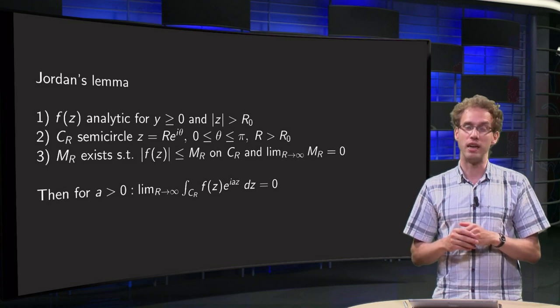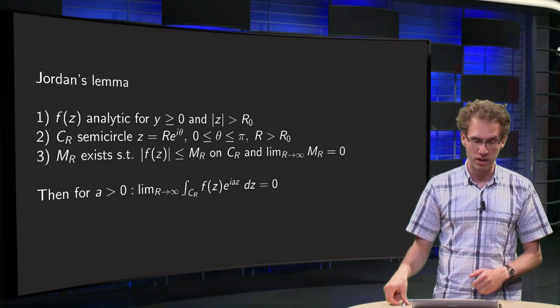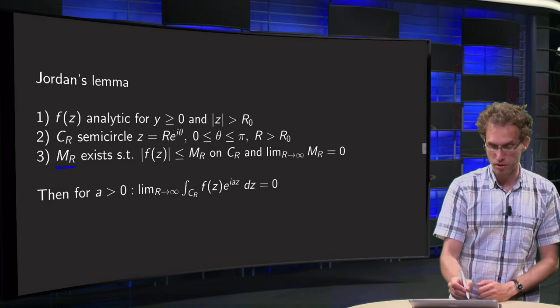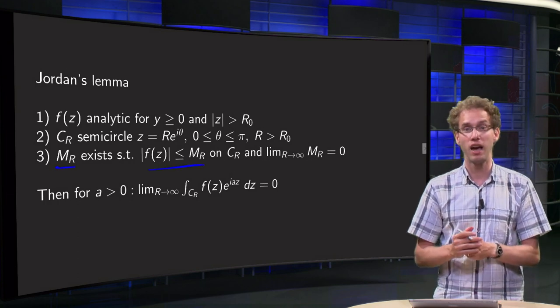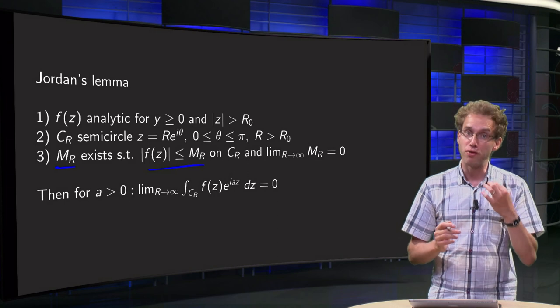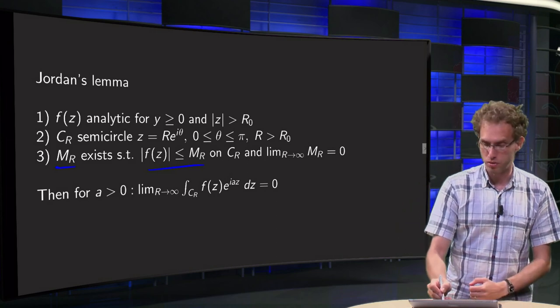And on this circle C_R, you want to have an M_R such that |f(z)| is bounded by this M_R on C_R. And furthermore, you need your M_R to vanish.